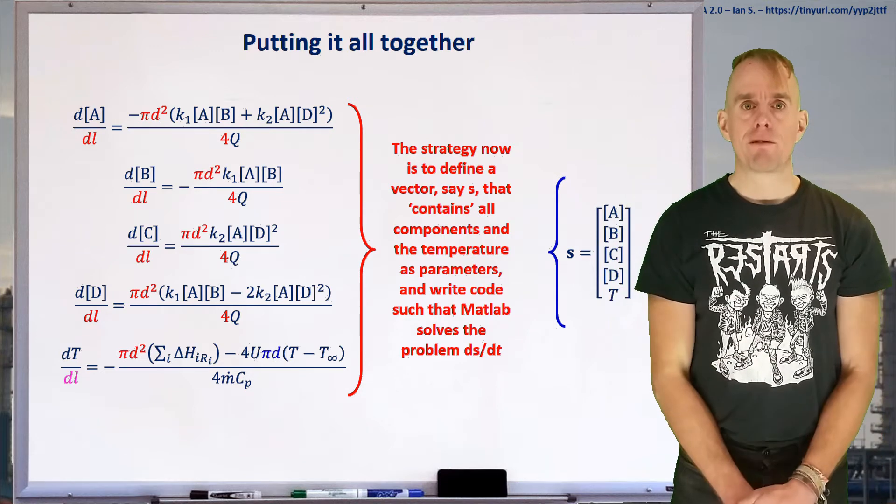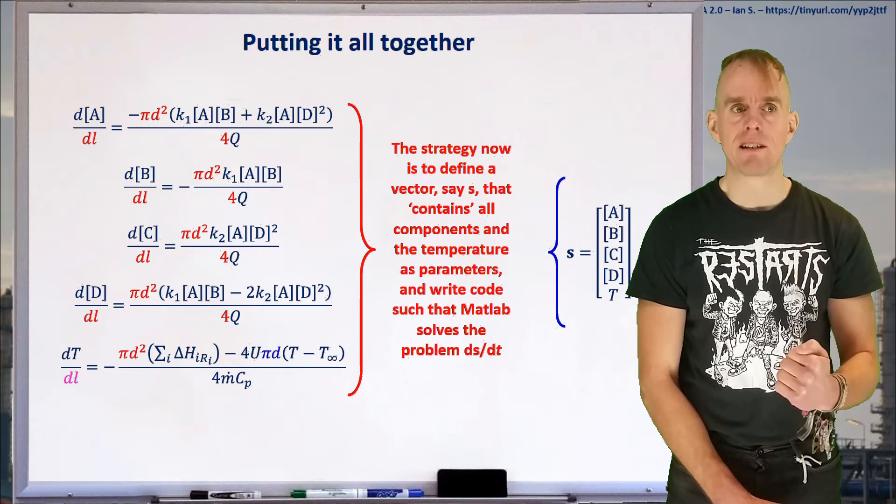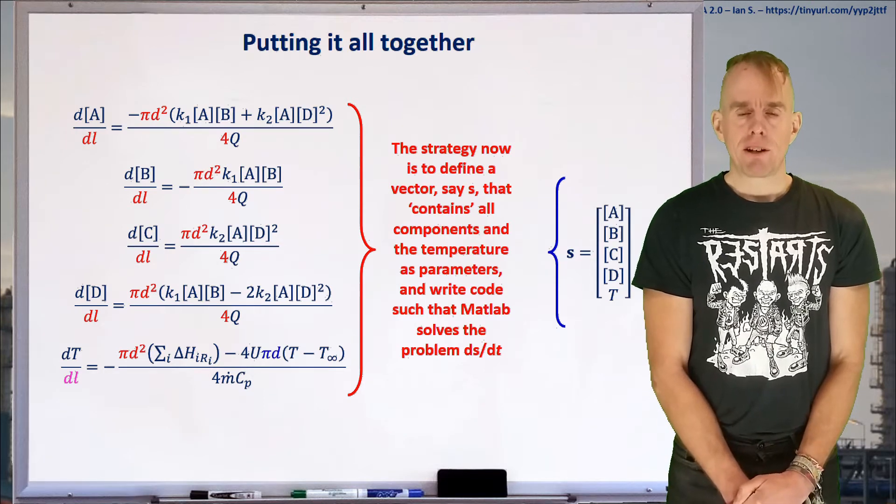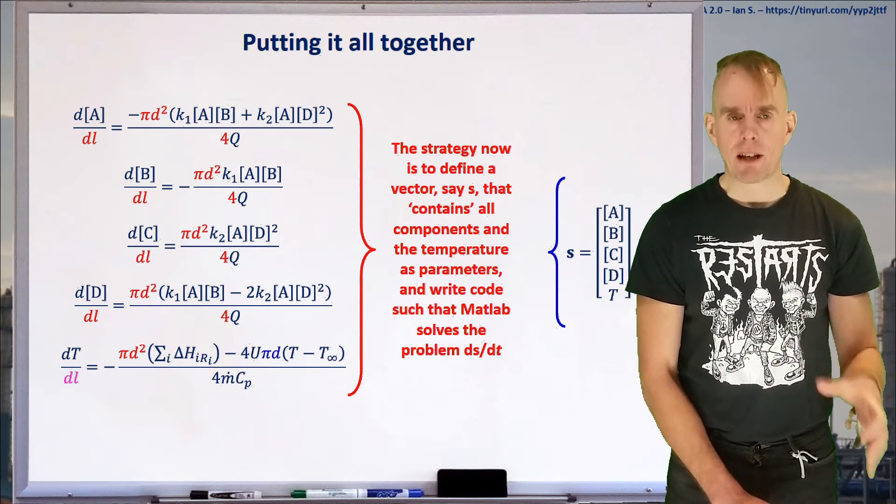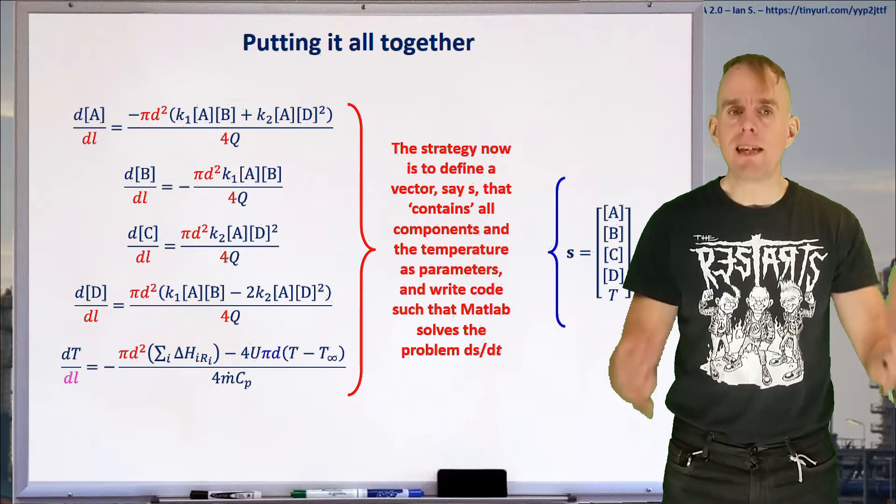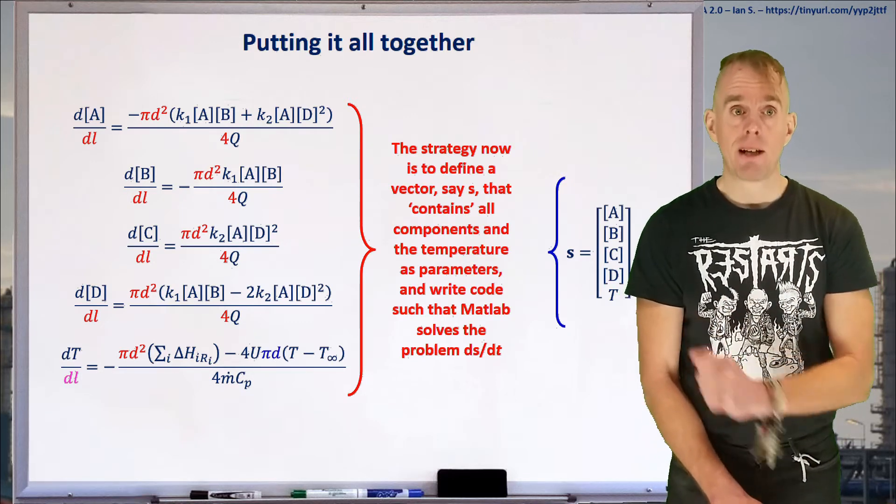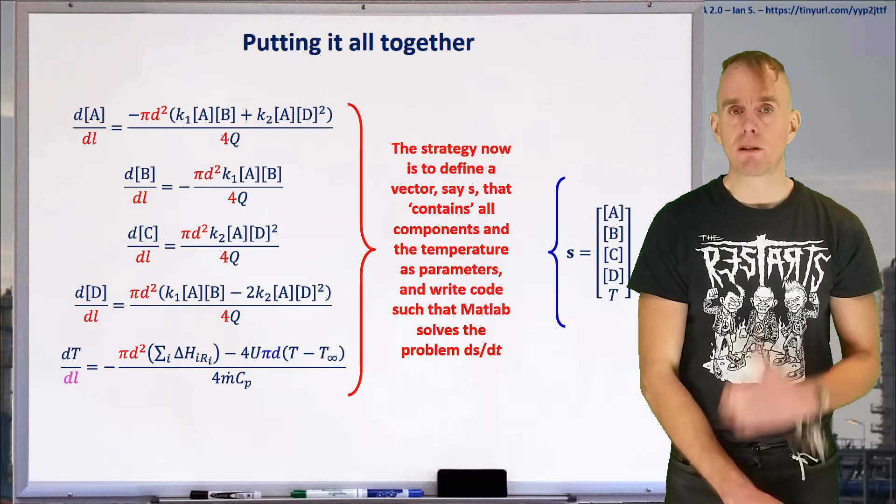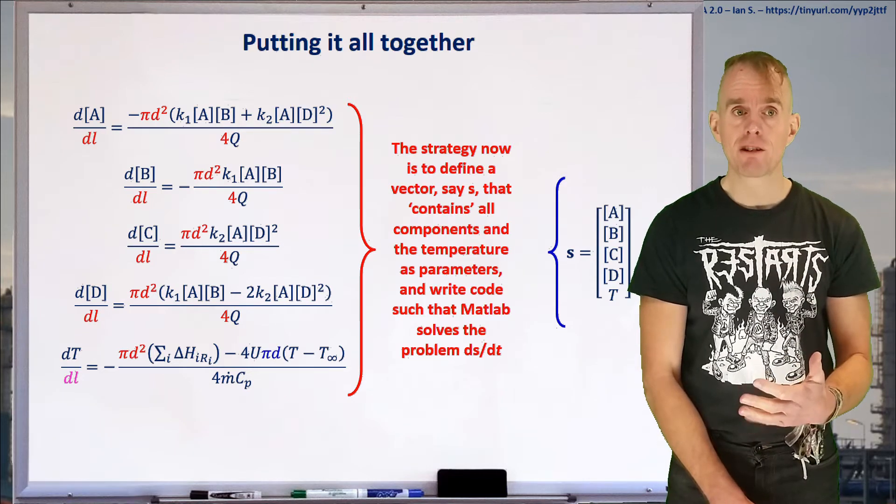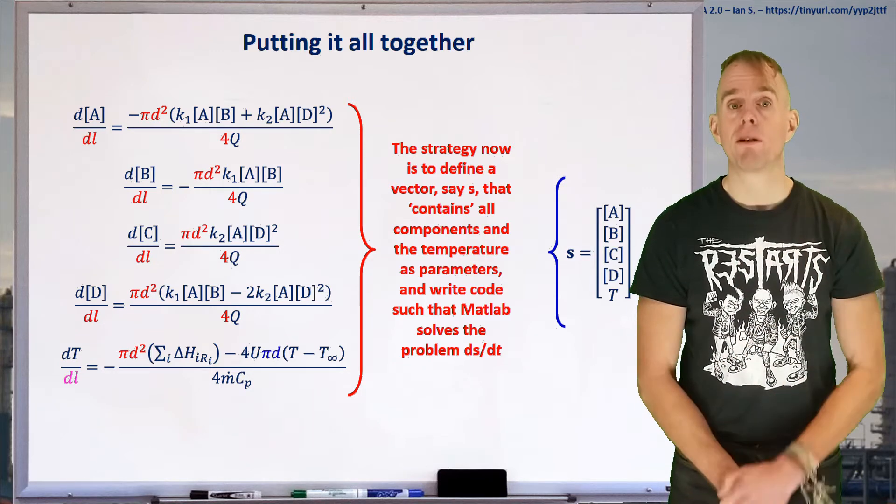What we need is all our ordinary differential equations with respect to the same parameter. Our reaction ODEs had d/dV of concentration, so we'll convert all to d/dl. Here on the board is the final set of ODEs I'm solving—note everything is with respect to length: dA/dl, dB/dl, dC/dl, dD/dl, and dT/dl. One way to solve these is to define a state vector S containing all the information we need to solve, and solve that vector as a function of length. My state vector S contains concentration of A, B, C, D, and temperature.